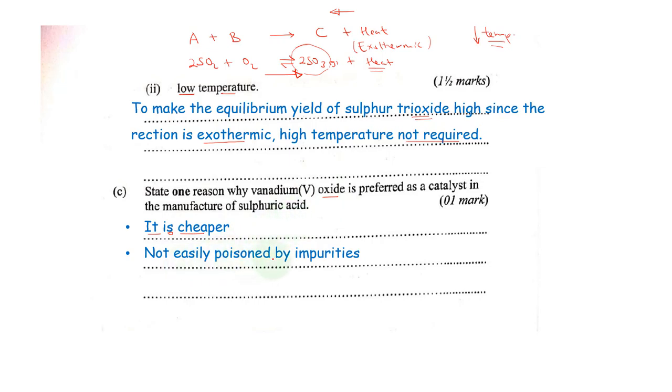It's also not easily poisoned by impurities. As long as something comes into contact, it can poison a given catalyst so that it does not effectively act as a catalyst. Vanadium-5 oxide is not easily poisoned by impurities. That's why it's preferred. Cheaper and not easily poisoned are good reasons as to why we use it as a catalyst.